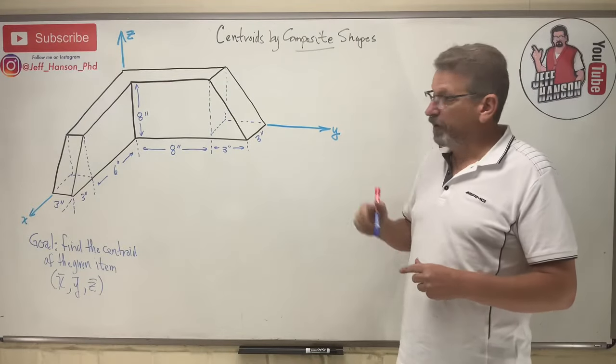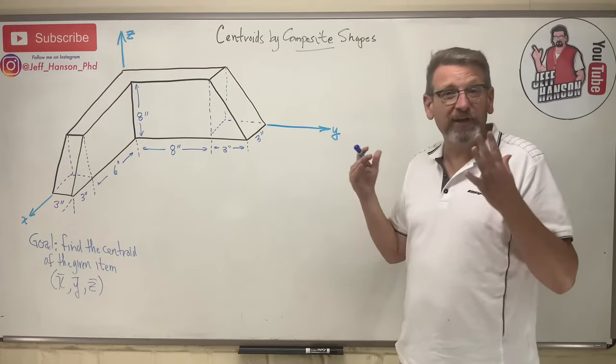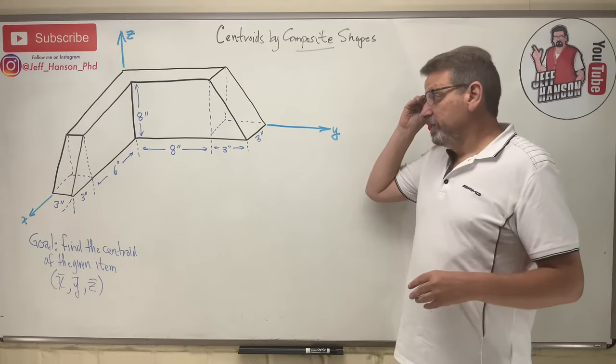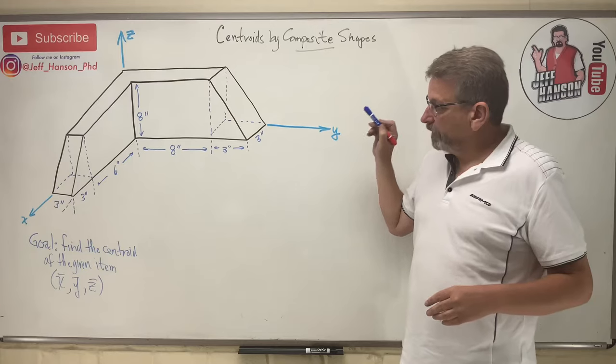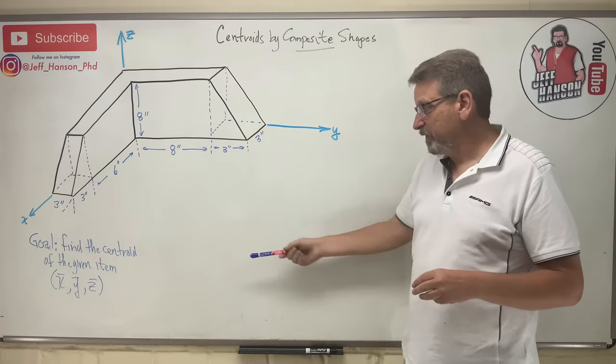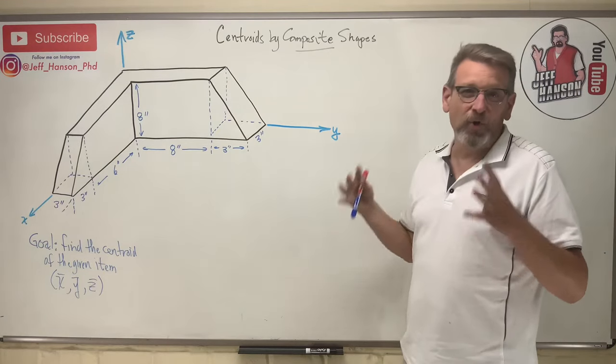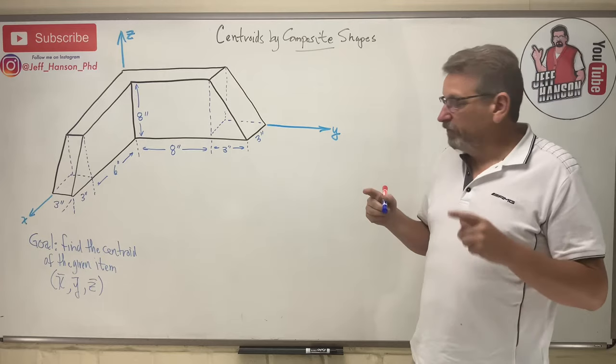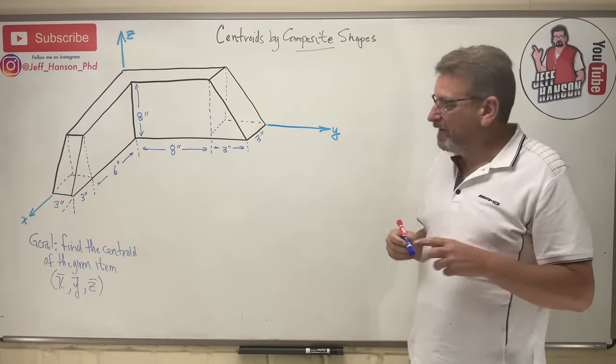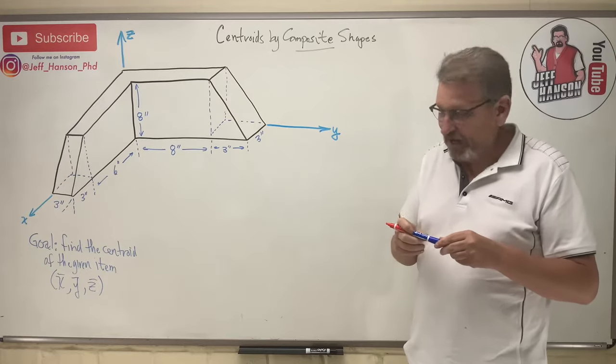Hey team, we're working on another centroid with composite shapes. The problems are getting harder and harder. So this one is going to deal with volumes. We're talking 3D this time. Find the centroid of the given item, X bar, Y bar, and Z bar. I think what I want to do again is I want to use my table method, but I think step one is I want to break these into shapes.